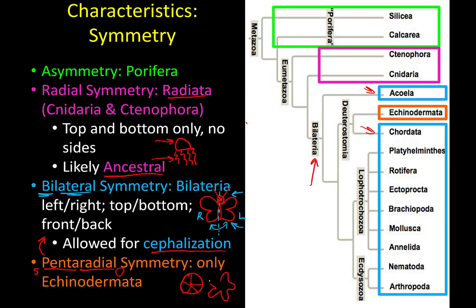Only echinoderms have pentaradial symmetry — things like sea stars, where the body can be divided into five separate pieces from the midpoint. Sand dollars are very similar; if you look closely, they have what almost looks like a little miniature sea star on the top, dividing the sand dollar into five pieces, which is reflected in their internal anatomy.